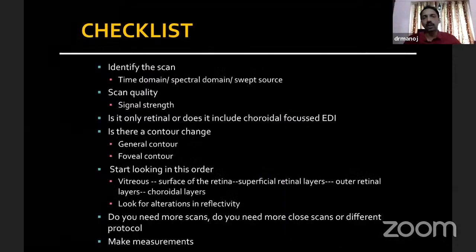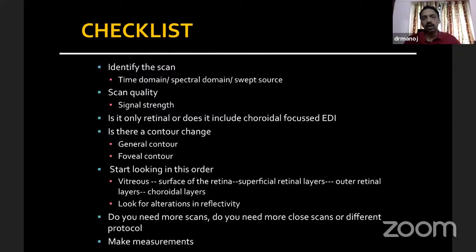This is the checklist I usually tell my fellows — what one needs to have whenever you get an OCT. First, identify what type of scan the machine has produced: is it a time-domain scan, spectral-domain OCT, or swept-source OCT? Then assess scan quality. Is it just a retinal scan or a choroidal-focused scan? There are certain scans called enhanced depth imaging scans which focus on the choroid. Then look at the contour of the image — is there a generalized change or any focal area where the contour has changed?